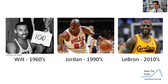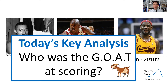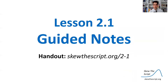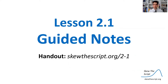Today we're going to look at three athletes: Wilt Chamberlain, Michael Jordan, and LeBron James. We're going to ask who was the GOAT — the greatest of all time — in terms of scoring in basketball. If you'd like to follow along using our guided notes, you can print them up at this URL.